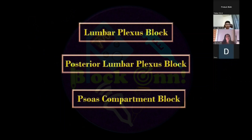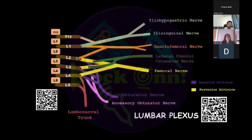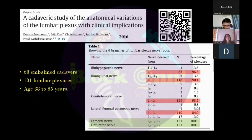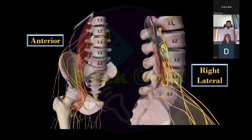All three terminologies are the same: Lumbar Plexus, Posterior Lumbar Plexus, and Psoas Compartment Block. Regarding formation, the Lumbar Plexus is formed by the ventral primary rami of L1 to L3, the major part of L4, and also a contribution from T12. An important point is that the lower abdominal nerves — the iliohypogastric and ilioinguinal nerves — get blocked in 70% of cases when you perform a Lumbar Plexus block. In a cadaveric study published in 2016, the femoral nerve and the obturator nerve have a fixed origin from L2, L3, and L4, whereas the other four components of the Lumbar Plexus have variable origins from T12, L1, L2, or L3. This should be remembered when selecting a block for a particular surgery.